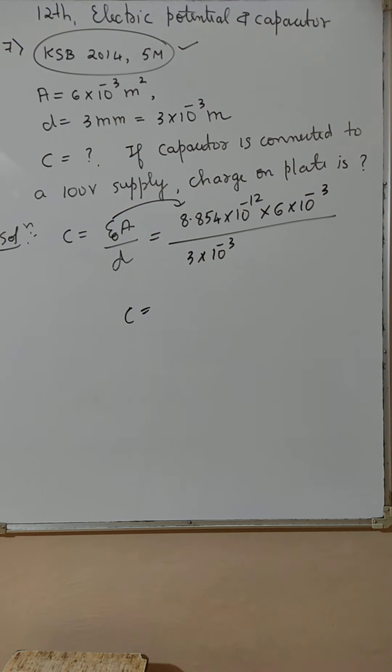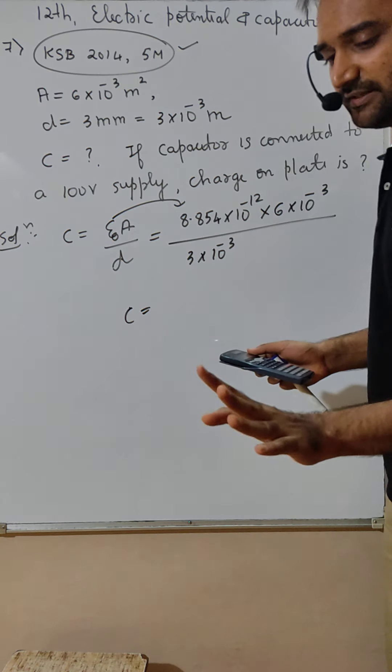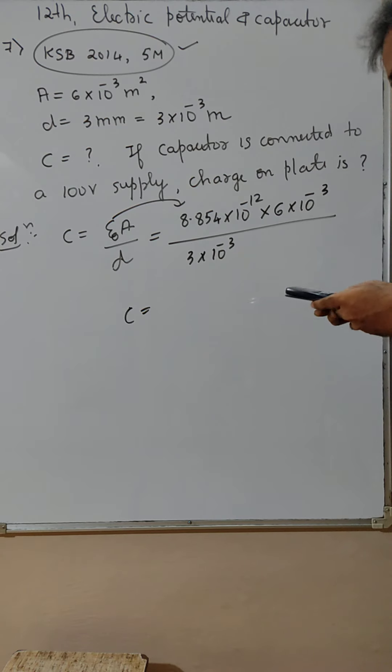8.854. Rule number 1, always write in first decimal. Always write the answer in first decimal or picofarad in any other farad. 8.854 into 6 divided by 3.